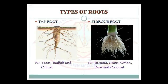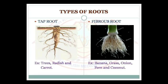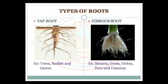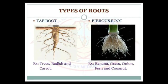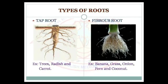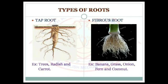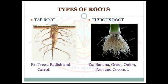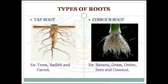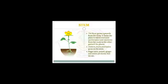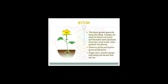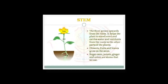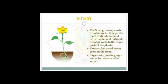Fibrous roots have thin, branching roots that grow from the base of the stem. Most grasses, banana, onion, fern, and coconut have fibrous roots. Go through the second figure which indicates fibrous roots.